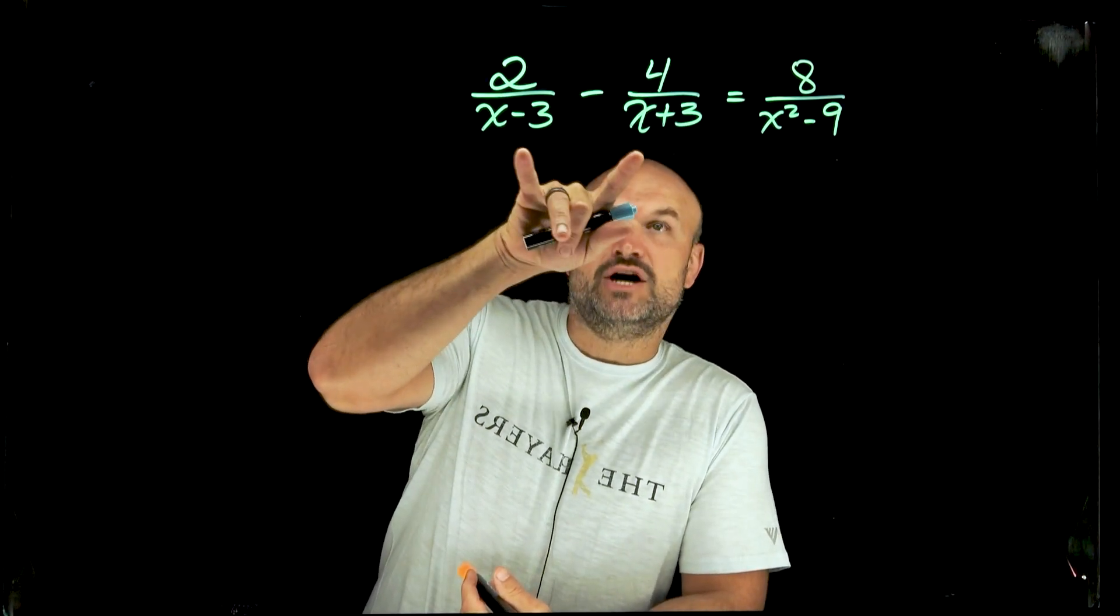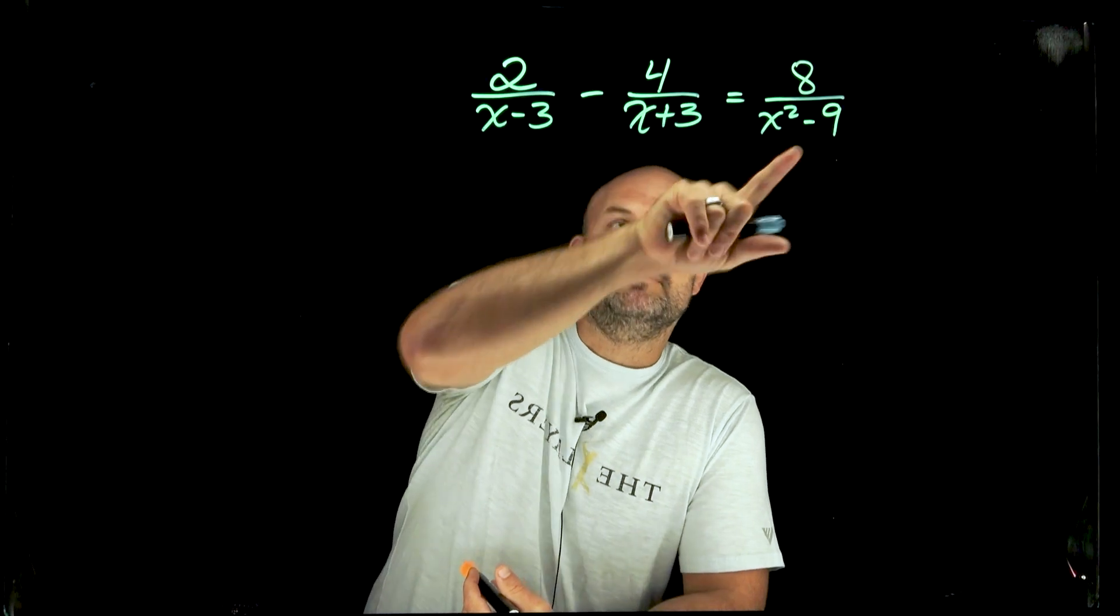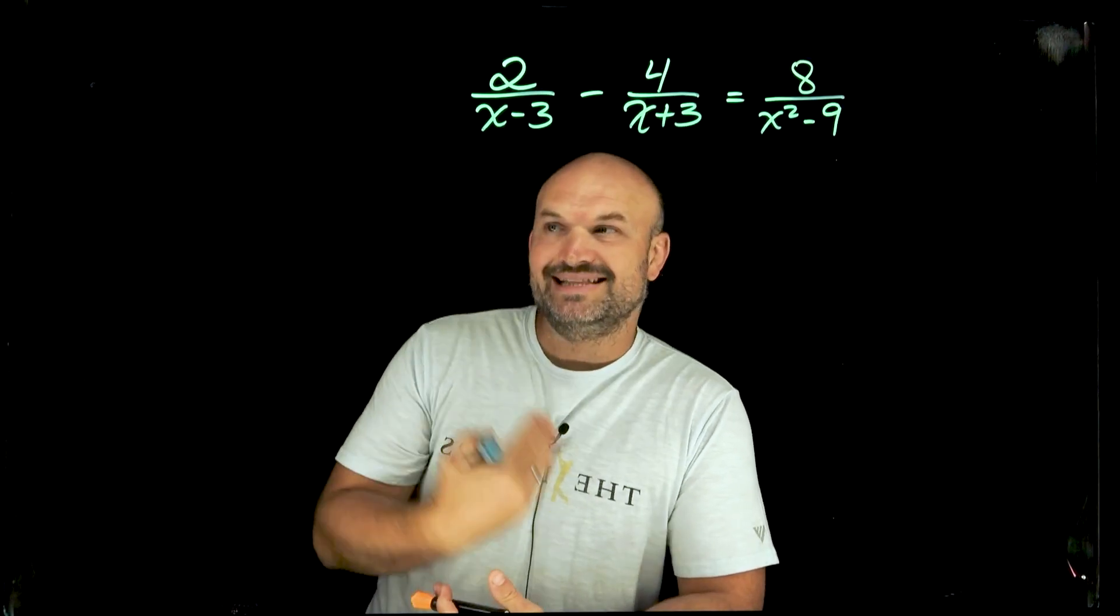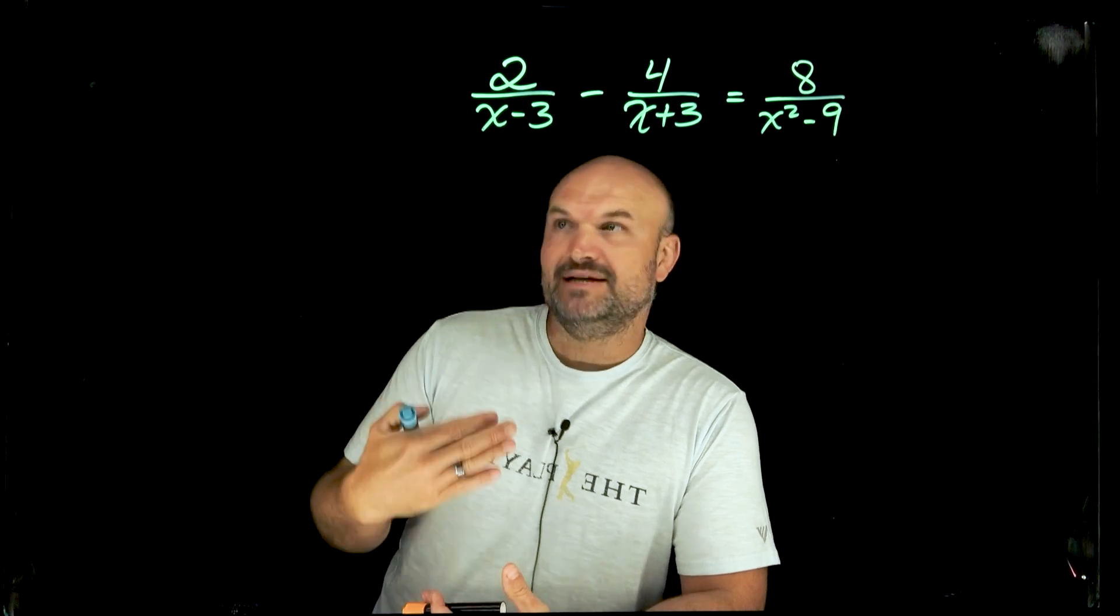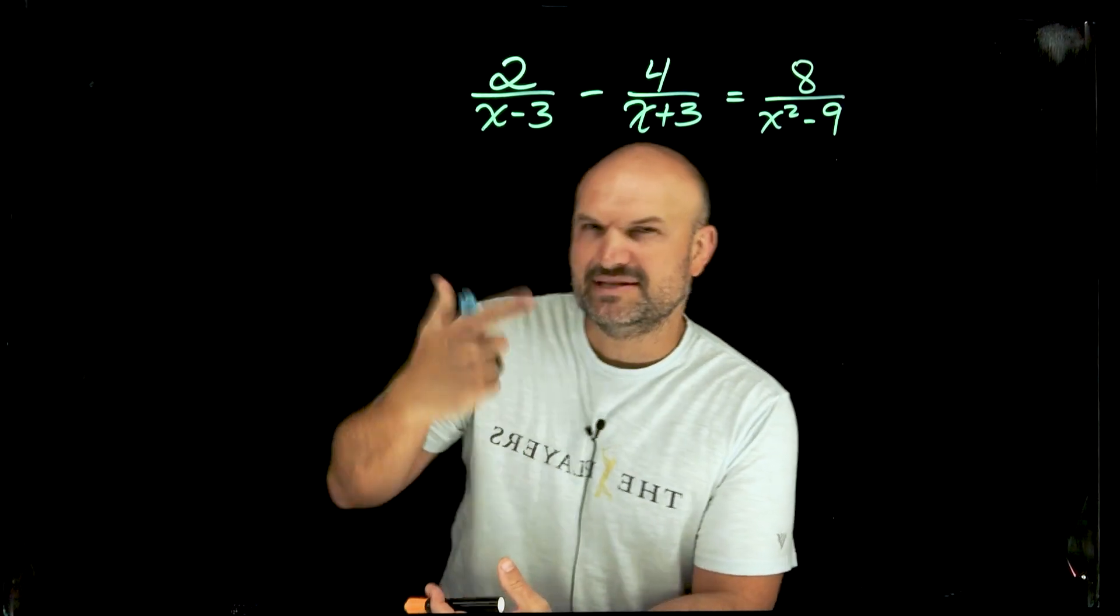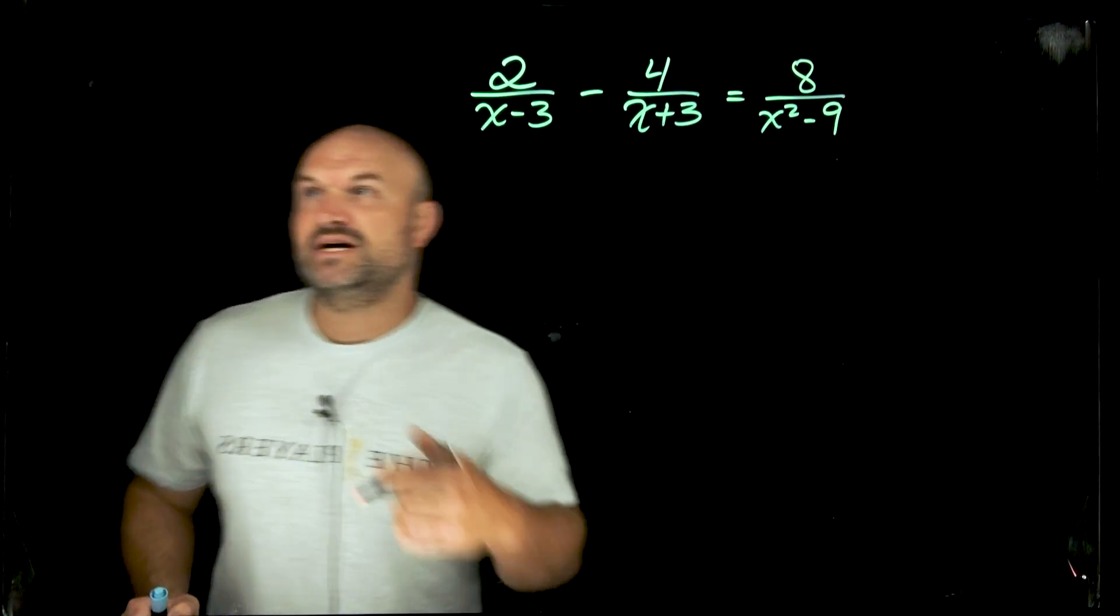When you see two different denominators, always look to see if their product is going to multiply to give you the third one. Because in the end, what we are looking for, ladies and gentlemen, is we're trying to be able to identify the least common denominator. And let me just kind of give you a quick little review of what I'm talking about.